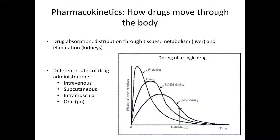Pharmacokinetics incorporates drug absorption, distribution through tissues, metabolism, and elimination. In this lecture, we will primarily focus on the differences in routes of administration. Given a single drug, the route of administration affects the dose, kinetics, and the distribution.